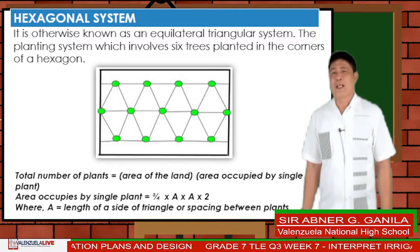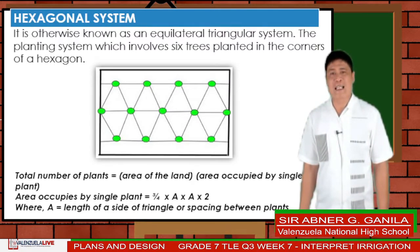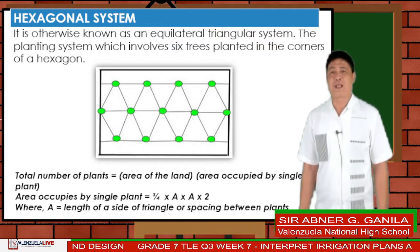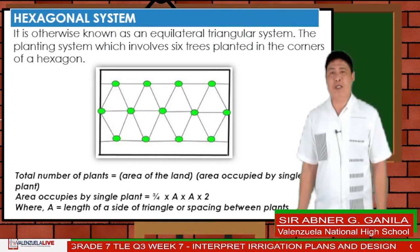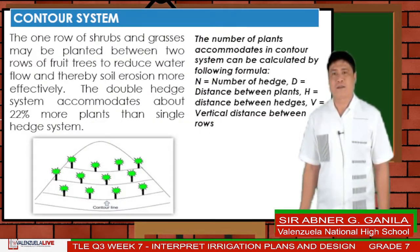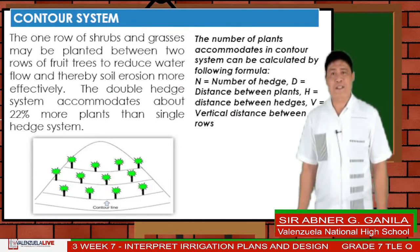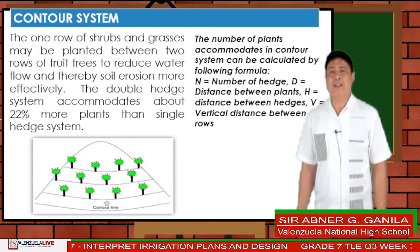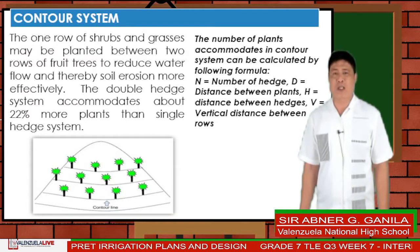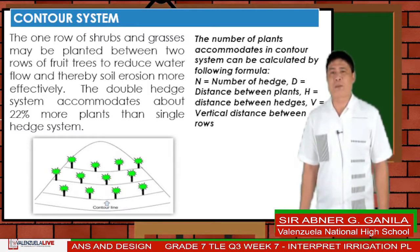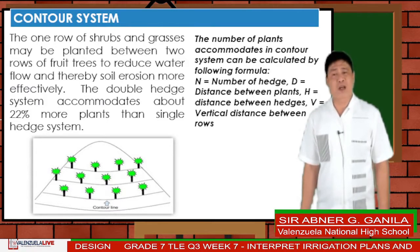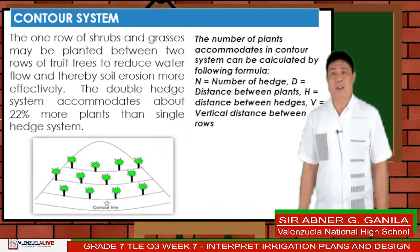Hexagonal system, otherwise known as an equilateral triangular system: the planting system which involves six trees planted in the corners of a hexagon. Contour system: the contour is an imaginary line connecting the points of equal height on a slope. This system has been evolved for planting fruit trees on hilly and sloped topography with the objective to minimize soil erosion. The trees are planted on the bench terrace prepared on the contour.